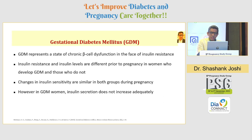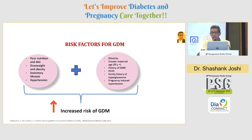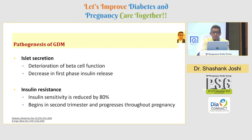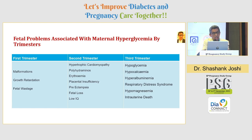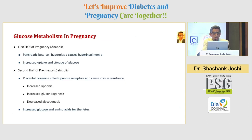Gestational diabetes is nothing but insulin resistance with a chronic beta cell dysfunction seen in pregnancy in women. We know that changes in insulin sensitivity are similar in both groups of pregnancy. GDM is caused by beta cell deterioration, blunting of first-phase insulin release, and insulin resistance. It all starts in the second trimester, and we clearly know all the fetal malformations that follow. We recognize the anabolic and catabolic pathways — as Professor Sheshaya told me almost 20 years ago, the first half of pregnancy is anabolic and the second half is catabolic.